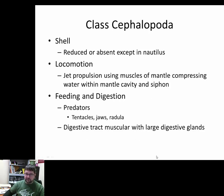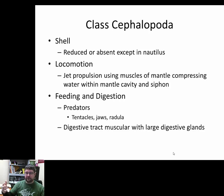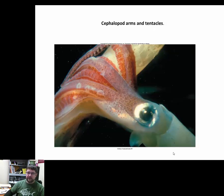Cephalopods have a true digestive system with a muscular digestive tract that churns material in the stomach, and digestive glands that release enzymes to break down food. You can see the tentacles and arms wrapping around objects.